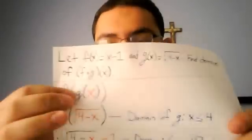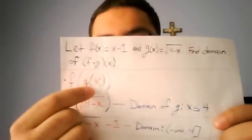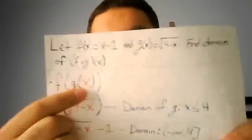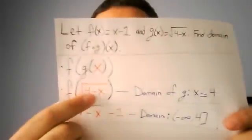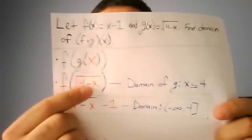So what we do is we've got to find g of x first. That's easy. You just plug in square root of 4 minus x.